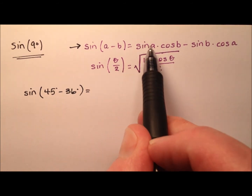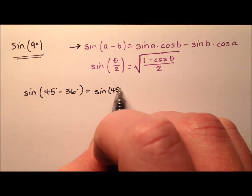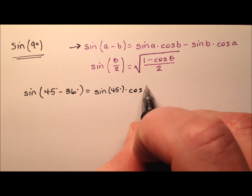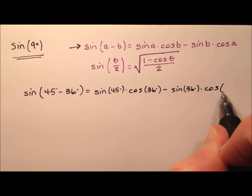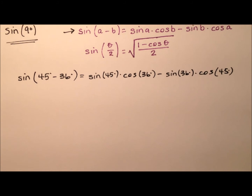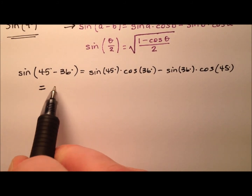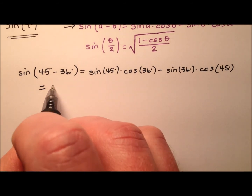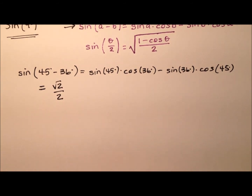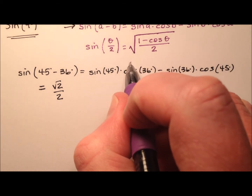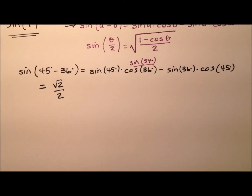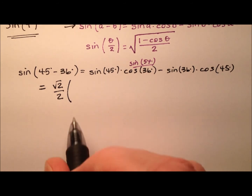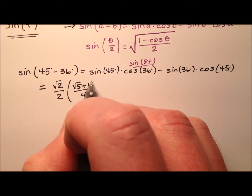We can expand that. So it's going to be the sine of 45 degrees times the cosine of 36 degrees, and from that we're going to subtract the sine of 36 times the cosine of 45. The sine of 45 is the square root of 2 over 2, and the cosine of 36 is also the same as the sine of 54 degrees. The sine of 54 degrees we worked out in a previous video, and that value is the square root of 5 plus 1 all over 4.